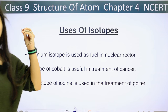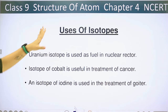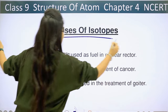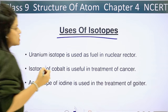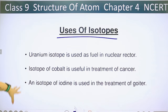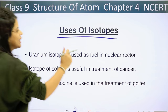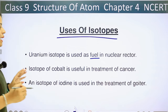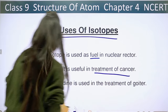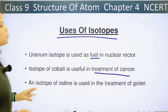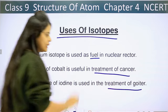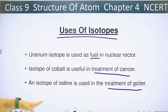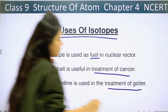One question can come in your MCQ. Uses of isotopes: uranium isotopes are used as fuel in nuclear reactors. Isotopes of cobalt are useful in treatment of cancer. And isotopes of iodine are used for treatment of goiter. Take these three as important points.